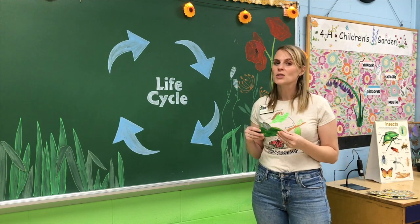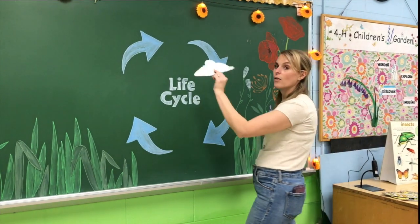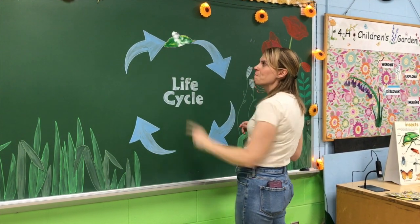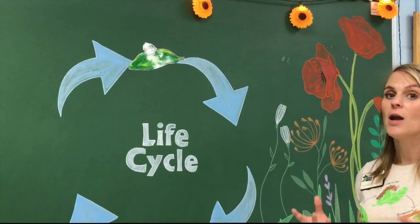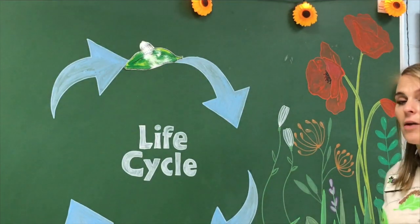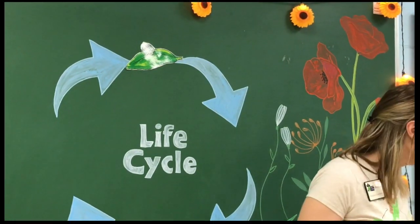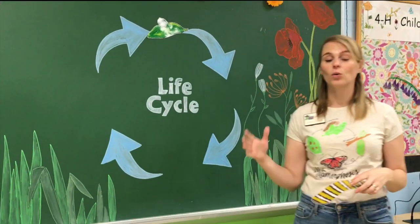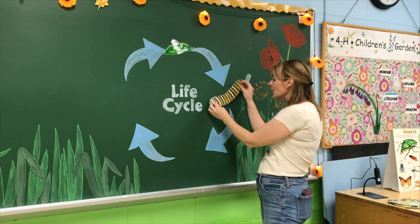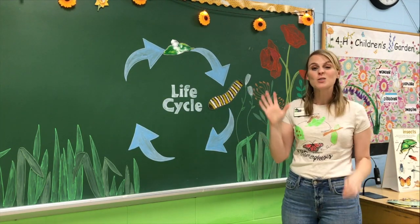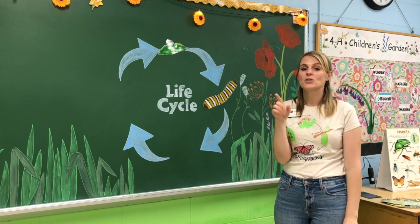They lay their eggs on host plants because the next stage of the life cycle is going to be very particular. Out of that egg is going to hatch a very hungry caterpillar. When that caterpillar hatches out, it's about the size of an eyelash. That caterpillar only has one job in its whole life: to eat. It actually eats so much that it has to split its skin five times. When it's ready for the next stage, it's going to make a J.